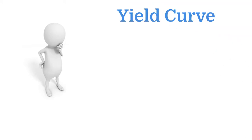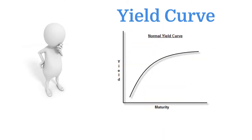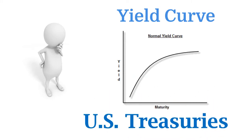A yield curve is nothing more than a line that plots the yields — interest rates for a debt instrument that have different maturity dates. The most commonly used debt instrument for a yield curve are the treasuries. So when you hear them talk about the yield curve, the proxy is — and what Wall Street is using — is the treasuries.